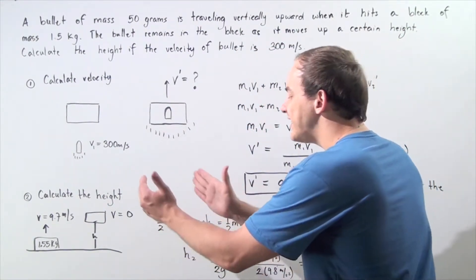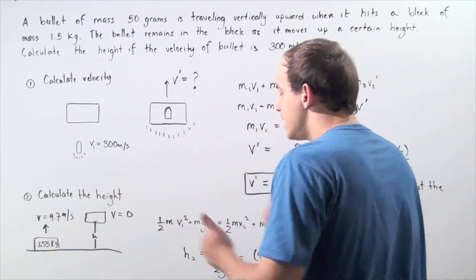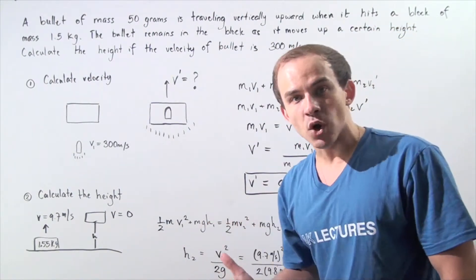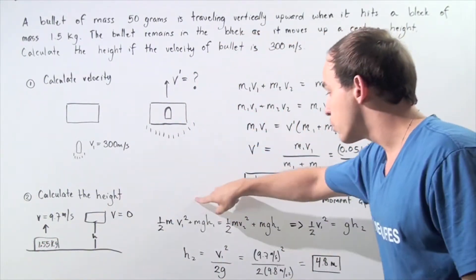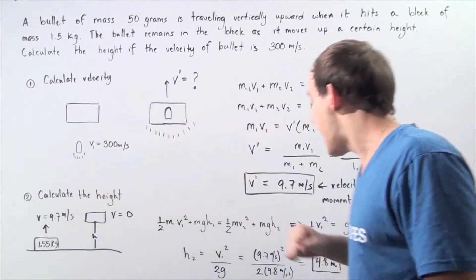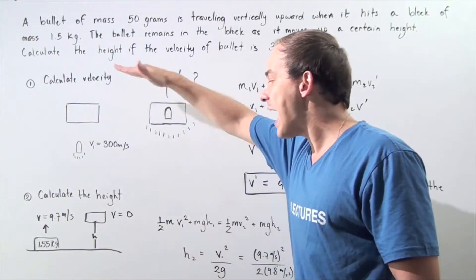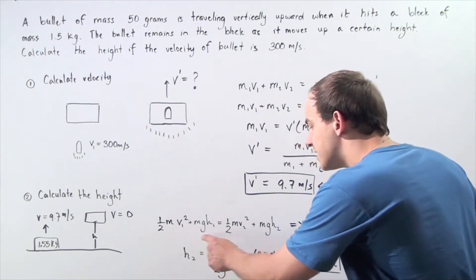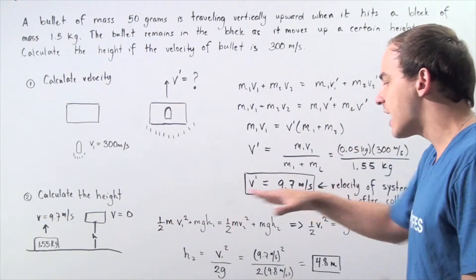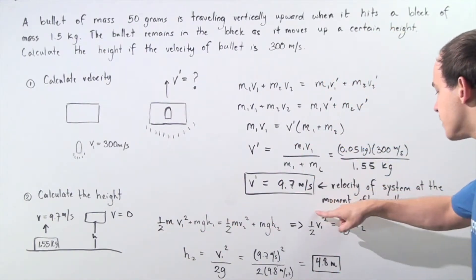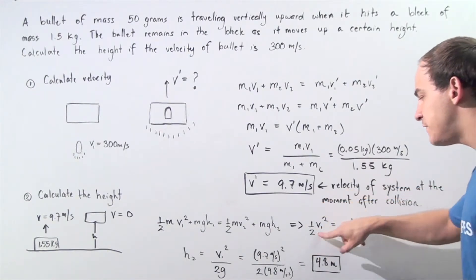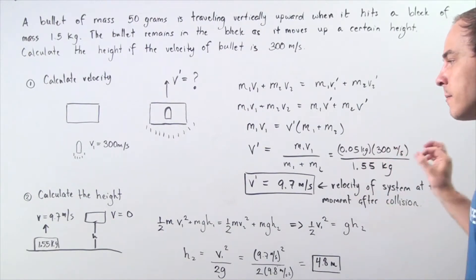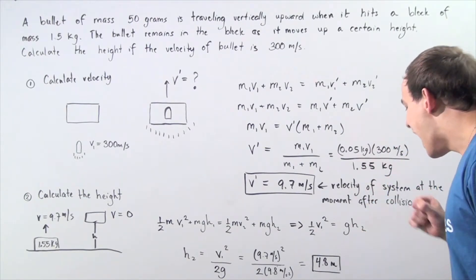The sum of kinetic and potential energy before equals the sum of kinetic and potential energy after. Since h1 is zero, the initial potential energy term cancels out. The final velocity is also zero, so the final kinetic energy term cancels out. The mass m appears in every term, so we divide both sides by m and are left with: one half v1 squared equals g times h2, where h2 is the maximum height we're looking for.